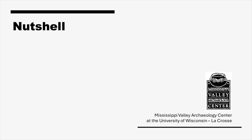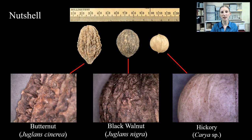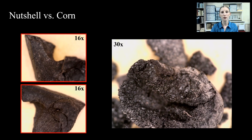Nuts from wooded areas were major food resources as well. Some common examples from southwest Wisconsin include butternut, black walnut, and hickory. Different surface textures help us identify these nuts: from the jagged, high ridges of the butternut, to the more rounded low ridges of the black walnut, to the smoother hickory with smaller ridges and shallow furrows. The thickness of the shell also aids identification. Nuts can look a little like corn on first glance, but nutshell is denser with a more compact structure, while corn is spongier and starchy looking.